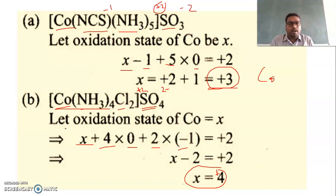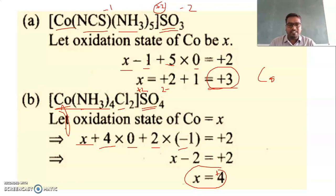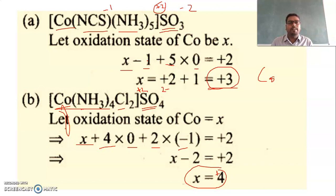This is how you can calculate the oxidation state of the central metal ion using a very simple method. To do this, you must know the charges of the ligands and the charge of the coordination sphere, which can be easily determined by looking at the charge of the counter ion present outside the complex. The oxidation number of the central metal ion is critical as it determines many properties like magnetic behavior, color, and catalytic activity.